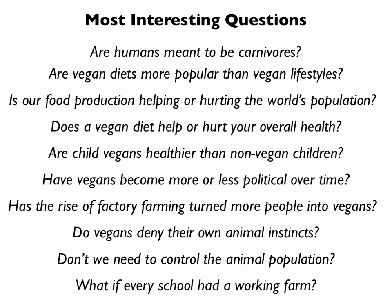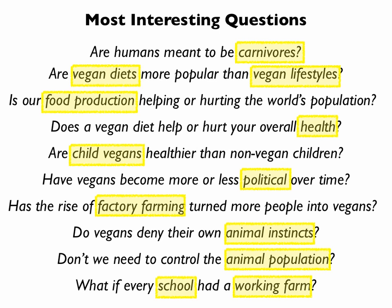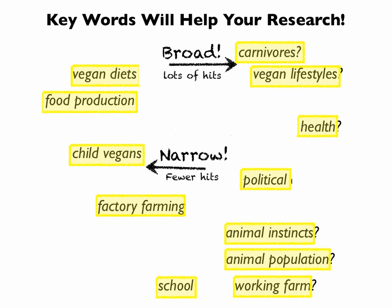You can use these questions not only to help guide your research, but also to identify keywords that will help you in various search engines. Some keywords are broad and will give you lots of hits, while some are narrow and will give you more specific hits — and you can combine them to make searches even more narrow. For example, combining 'child vegans' and 'schools with working farms' gives very specific results compared to a broad term like 'carnivores.' The next tutorial will take you through how to use library resources to find more answers to these questions and refine them further.